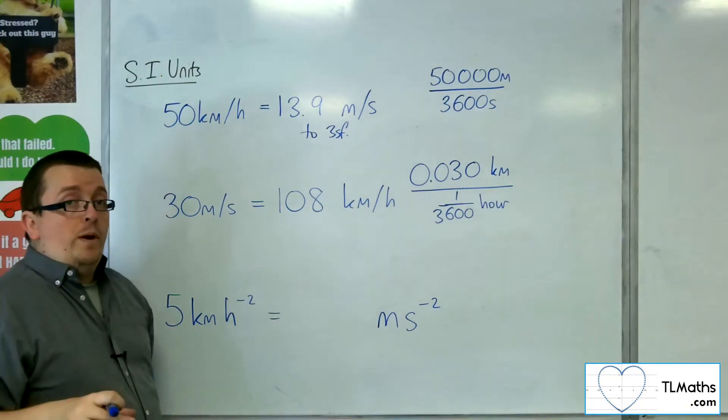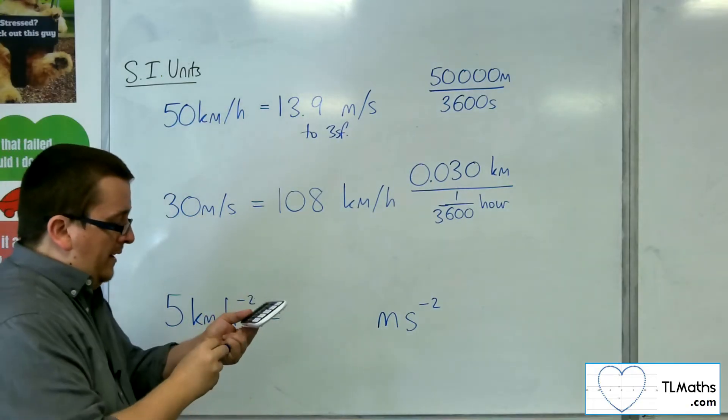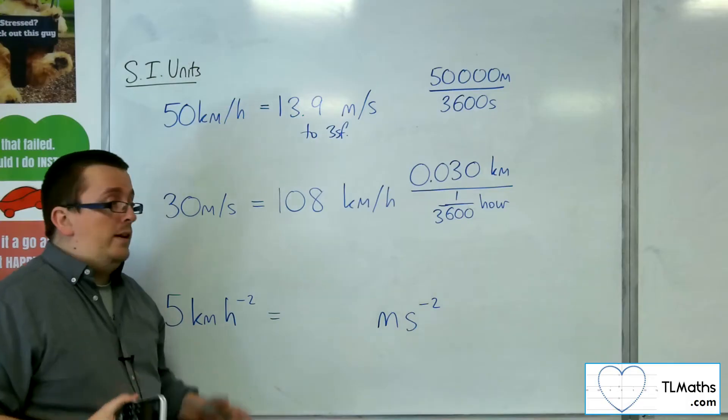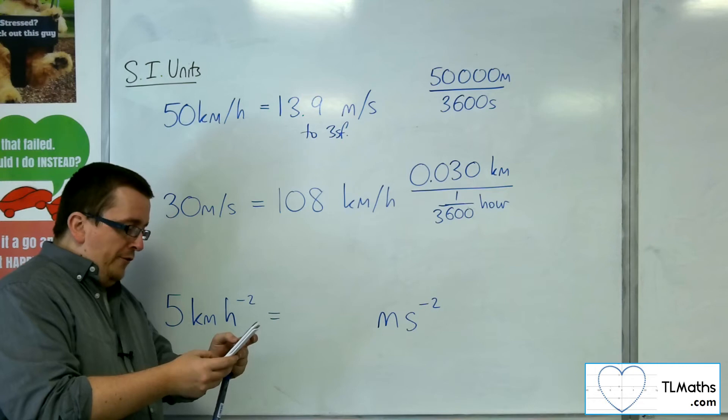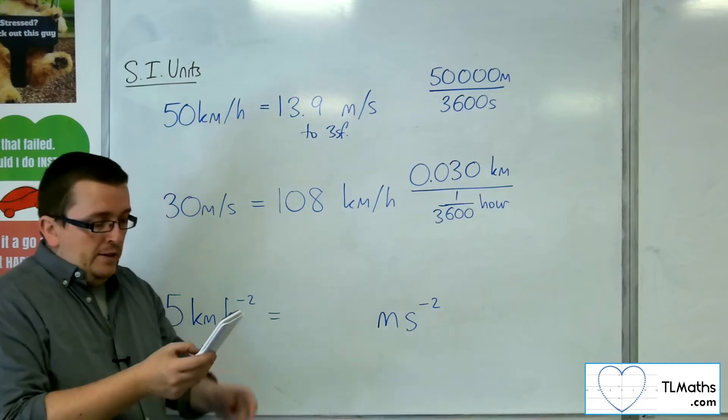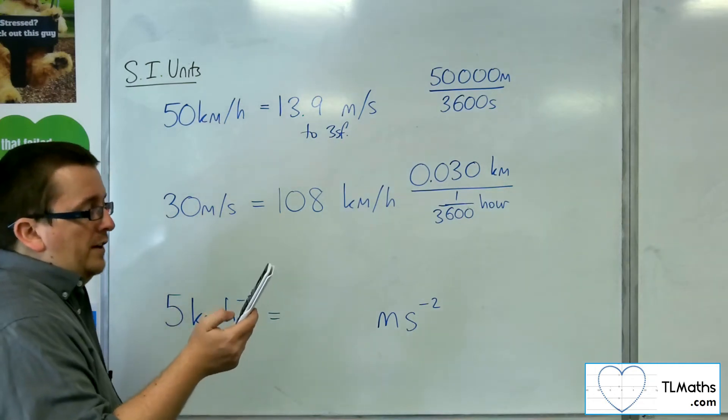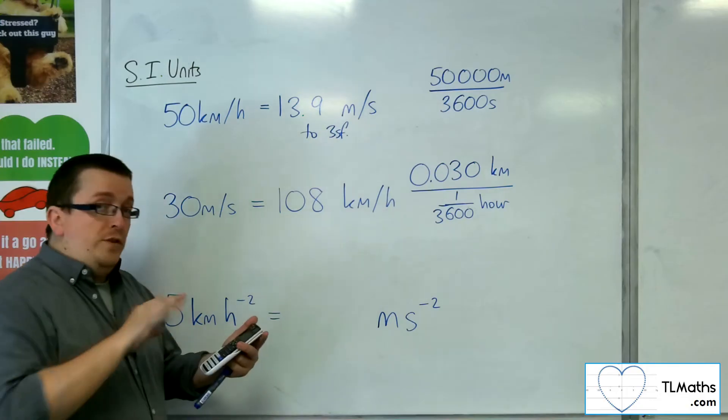Now, the quick way of doing this on your calculator, so on the Casio ClassWiz, there is a conversion function. So if you go to Shift and then press number 8, you'll see there's a CONV, convert, and it gives you a few options.